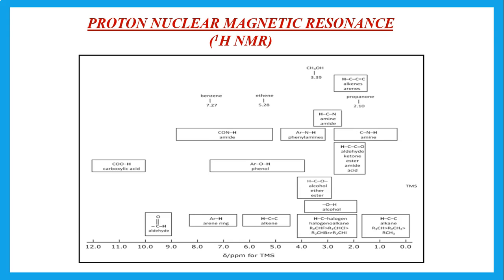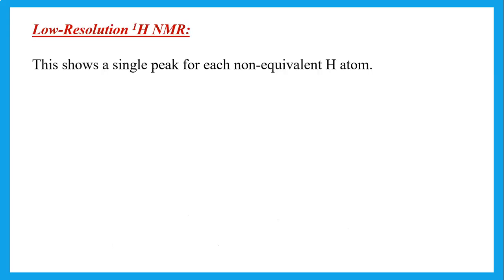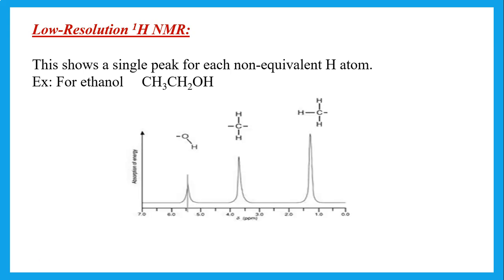Proton NMR spectroscopy uses the table of chemical shifts in the data booklet. In low resolution NMR, single peaks are given with no splitting. For example, ethanol gives three peaks in low-resolution proton NMR: one for the CH₃ hydrogens, one for CH₂ hydrogens, and one for the OH hydrogen. The heights of the peaks are relative to the number of hydrogens — three hydrogens gives a higher peak than two, which is higher than one. The area under each peak indicates the relative number of hydrogens.